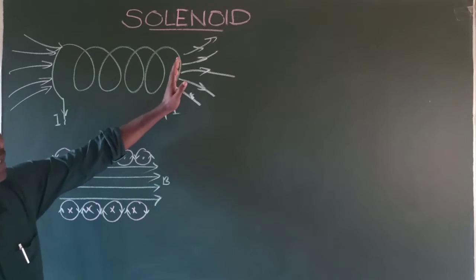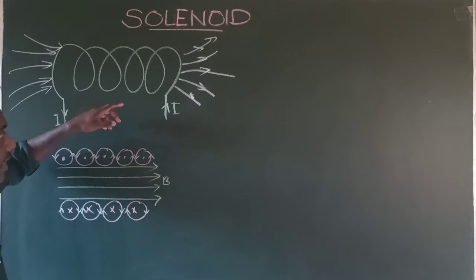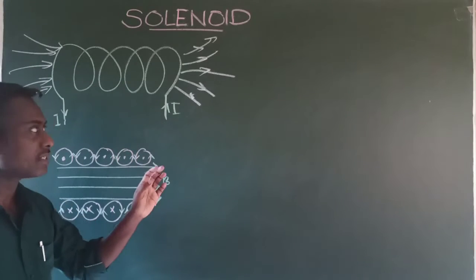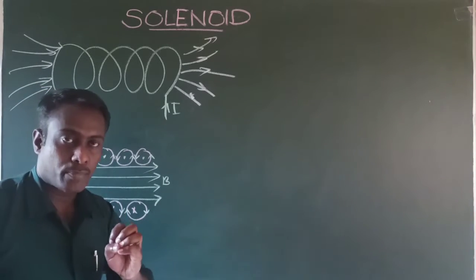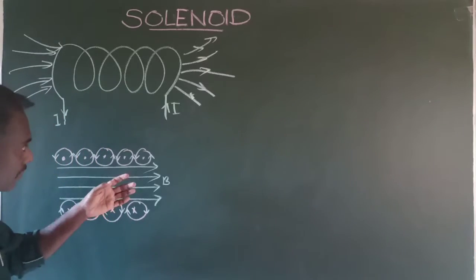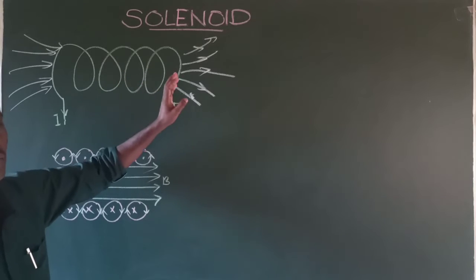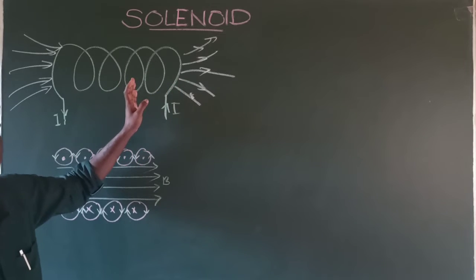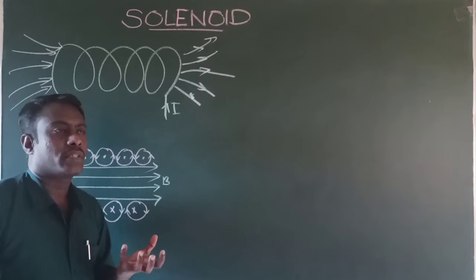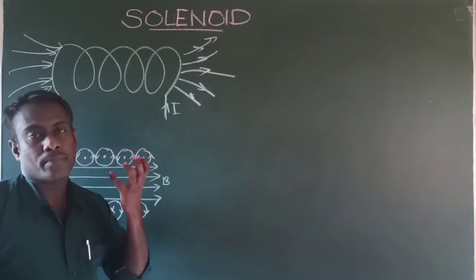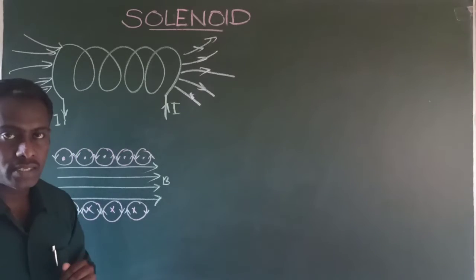The solenoid consists of a large number of turns, meaning a large number of circular loops is present inside a solenoid. So the effective magnetic field produced by a solenoid will be the sum of the magnetic fields produced by each individual circular loop present in it. We now consider how the magnitude of magnetic field produced inside the solenoid and outside the solenoid is different.